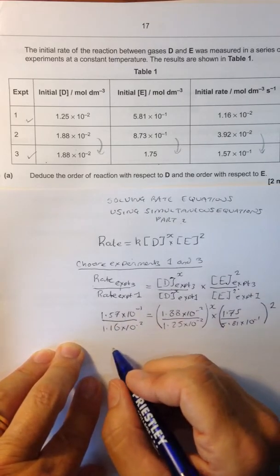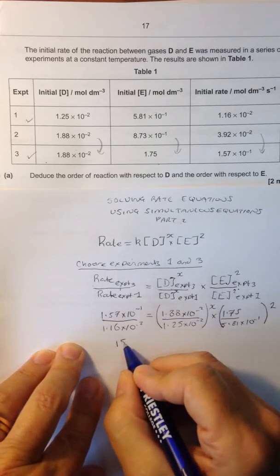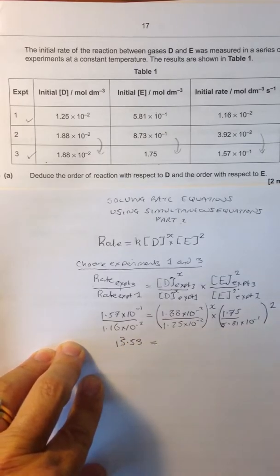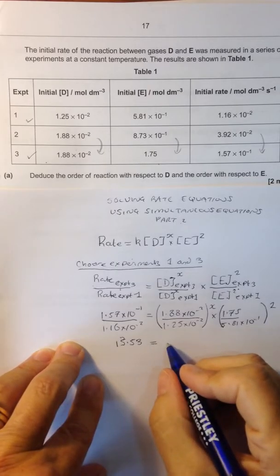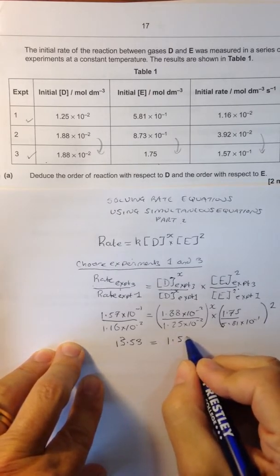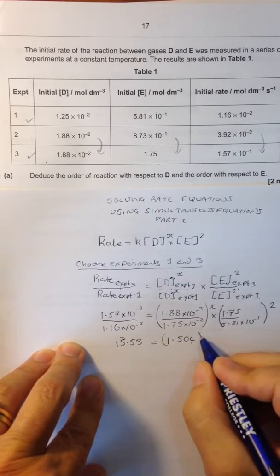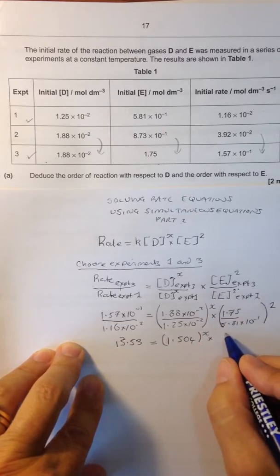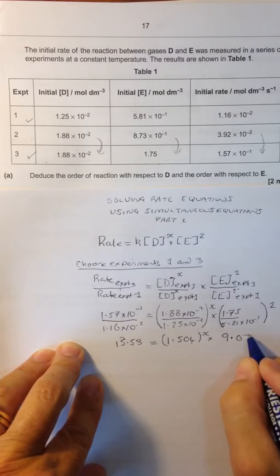Go to your calculators now, that's simplified to 13.53, and that simplifies to 1.504 to the power of X, because we still don't know the concentration. And this simplified to 9.072.